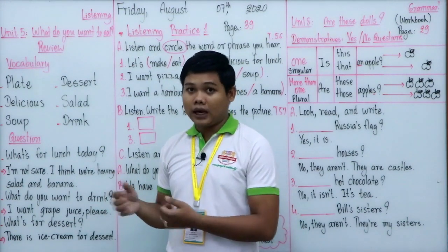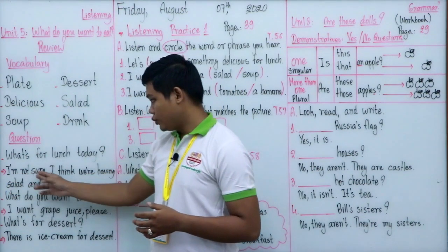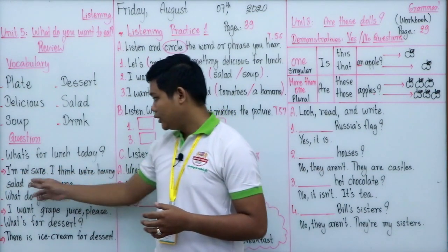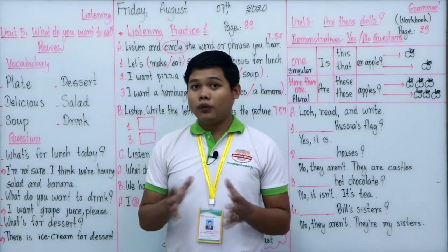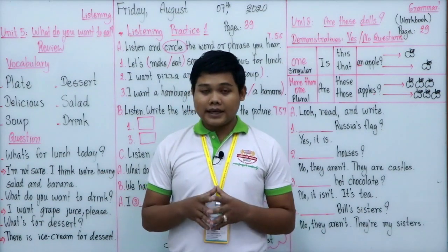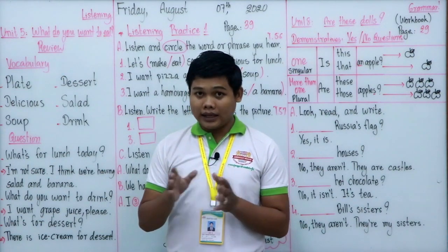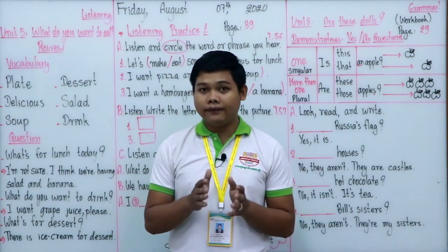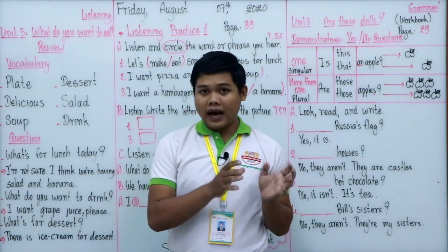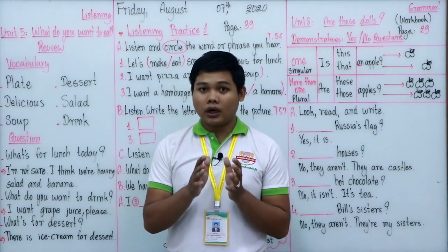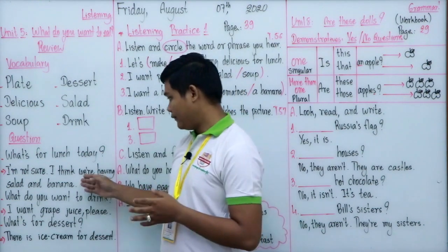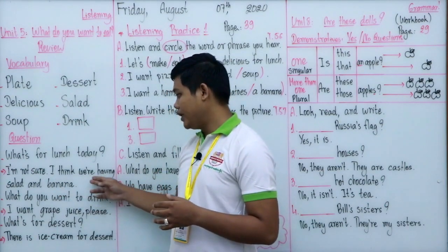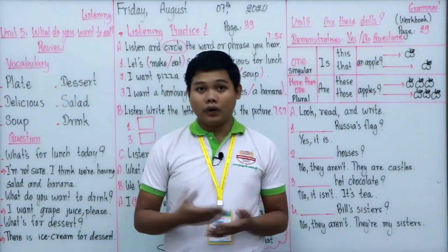The sample answer is: 'I'm not sure, I think we're having salad and banana.' You can answer in many ways. If you know exactly what the lunch is, you can say 'We have chicken and rice for lunch' or 'We have pizza and soup for lunch.' But in this case, the girl is not sure, so she suggests salad and banana.